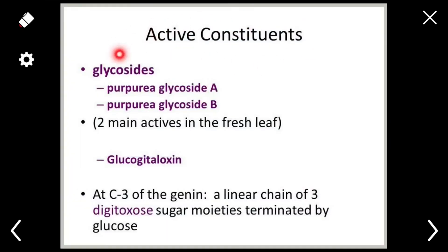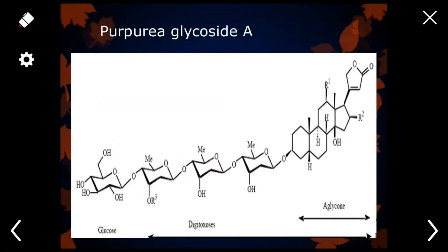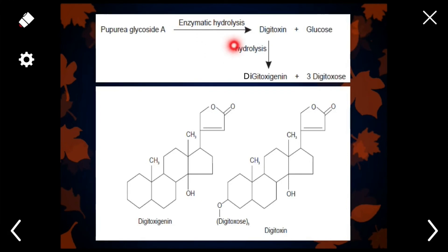Active constituents present in Digitalis purpurea include purpurea glycoside A, purpurea glycoside B, and lanatoside. Purpurea glycoside A is a cardenolide containing a butyrolactone ring, with an aglycone and attached sugar molecules. Upon enzymatic hydrolysis, removing one glucose molecule from purpurea glycoside A yields digitoxin. Further hydrolysis of digitoxin gives digitoxigenin and three digitoxose molecules.